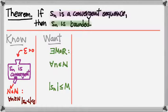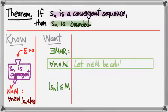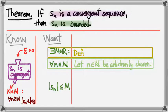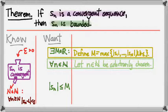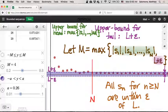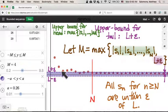Looking at the quantifiers in the boundedness definition, the universal quantifier corresponds in the proof to: let n be an arbitrarily chosen natural number. The burden of proof is to construct this capital M. Somewhere we'll have a statement like 'define M to be something.' Based on our intuition, the way to get M — our upper bound for all terms in the sequence — is to take the larger of the upper bound of all terms in the head and L plus epsilon, which serves as an upper bound for the entire tail.